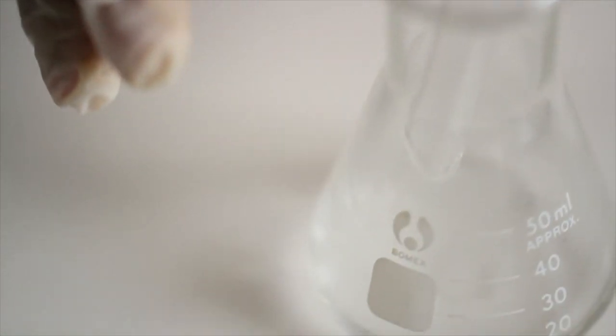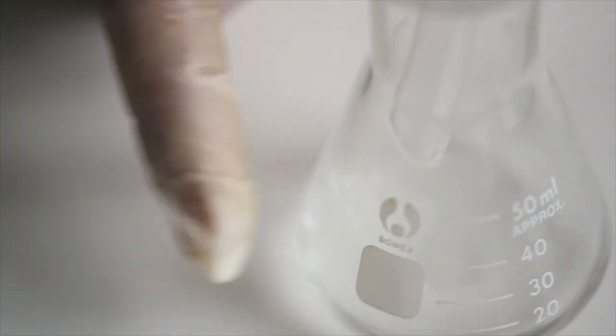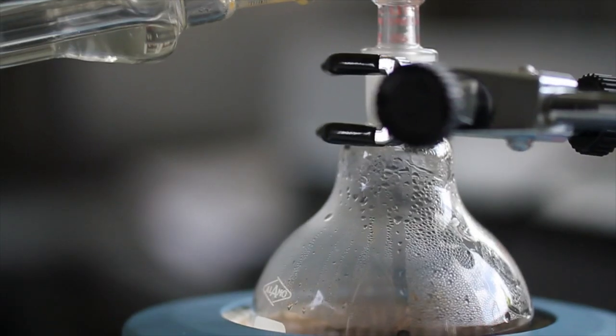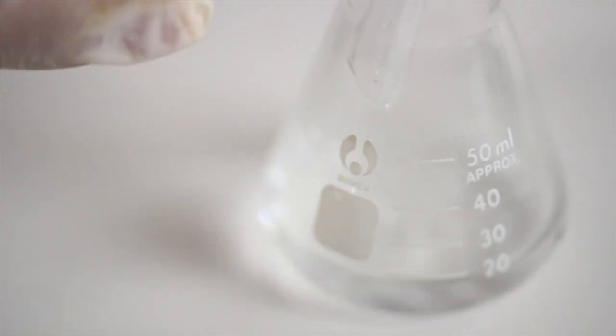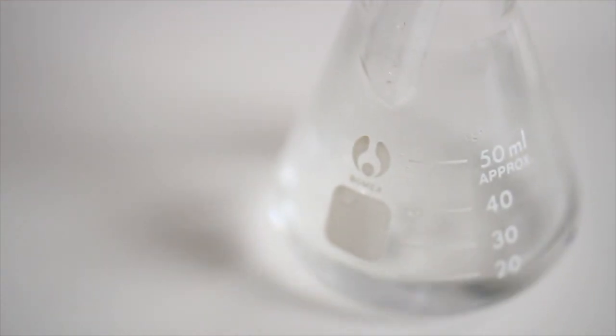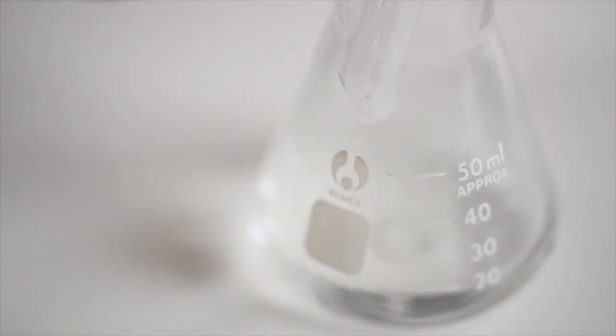Temos que estar destilando hasta que teñamos a seguridade de que todo o alcohol que estaba inicialmente no viño pasou ao matraz Erlenmeyer. Para ter a seguridade de que pasou todo ese alcohol, esperaremos a ter uns 60 ou 70 mililitros recollidos.